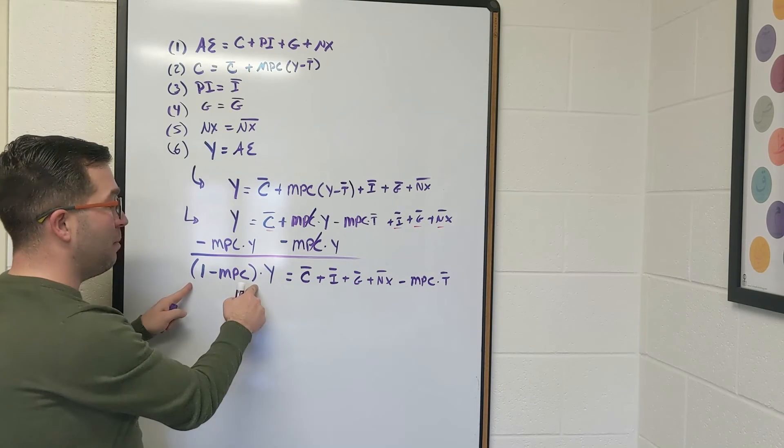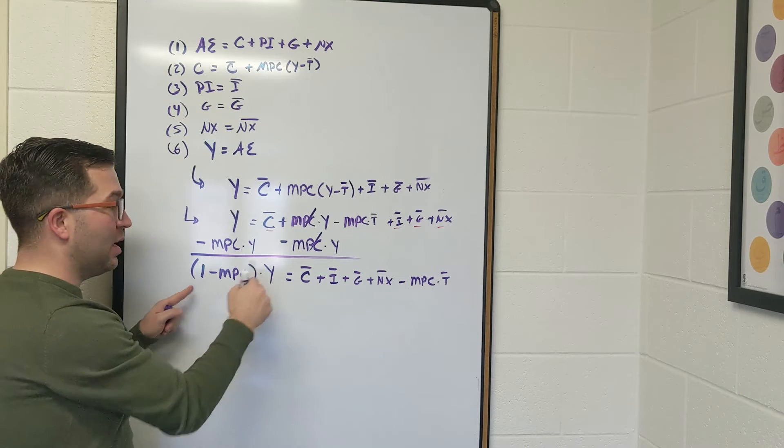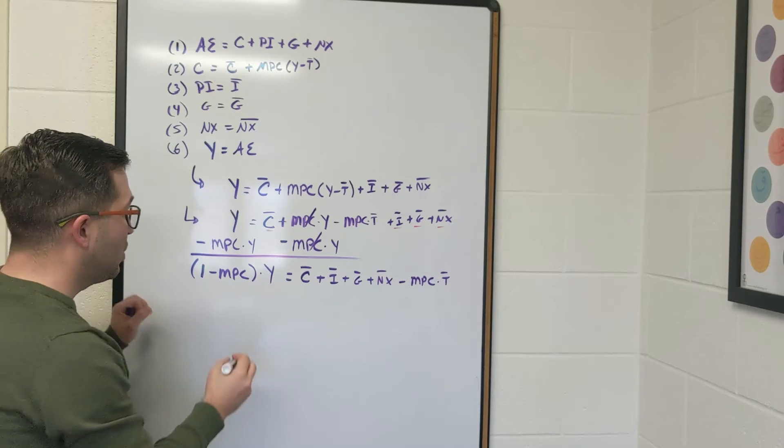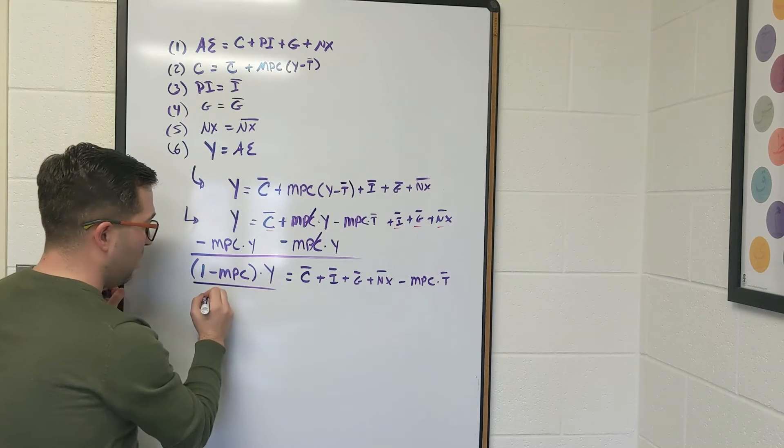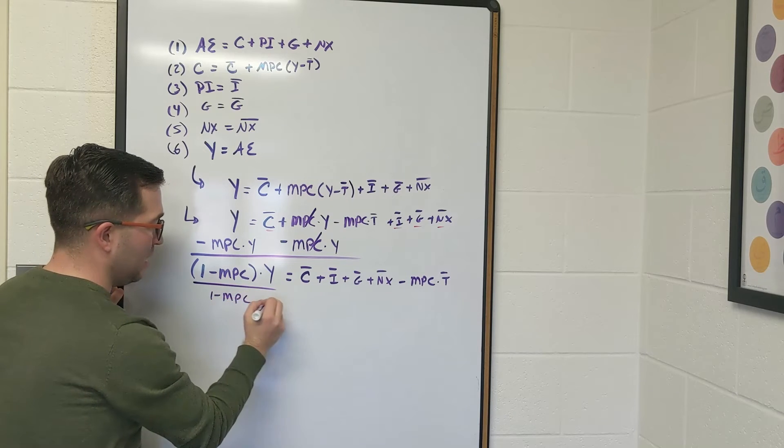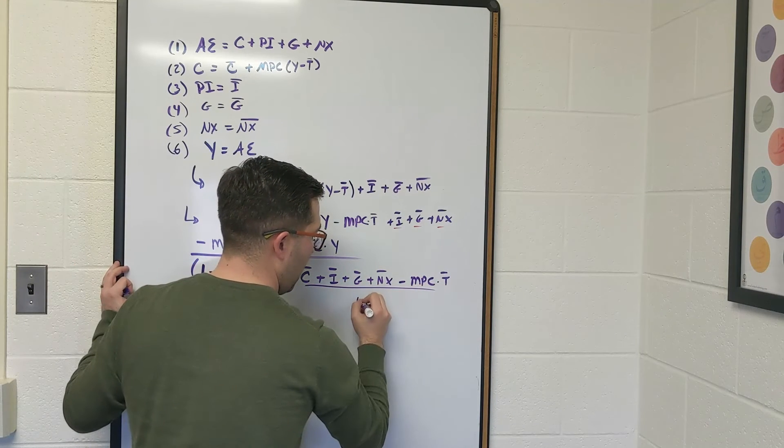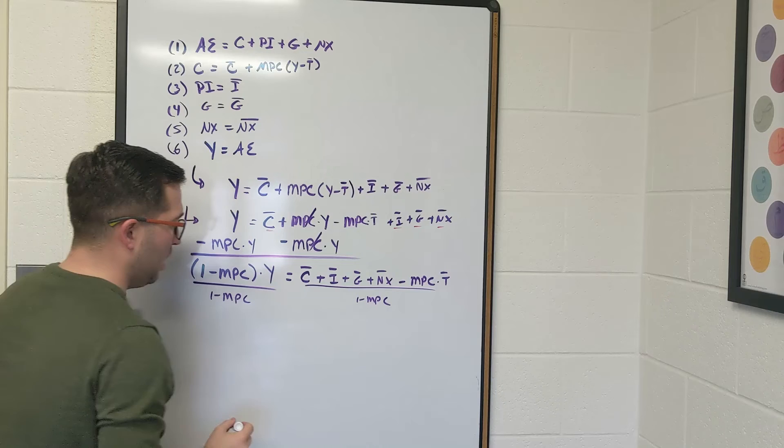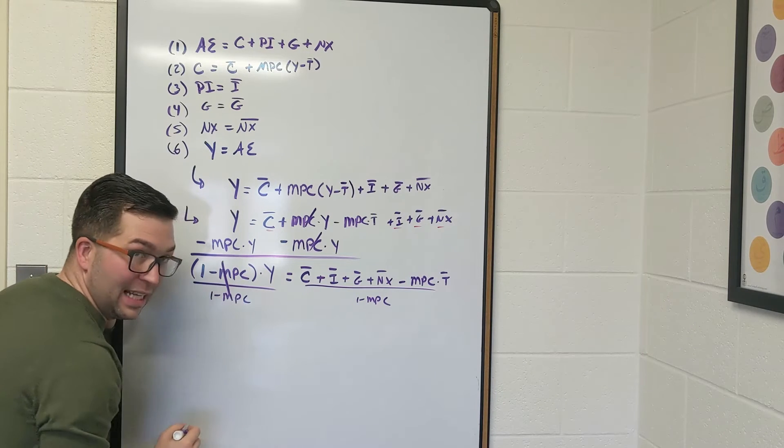Now we need to divide both sides by 1 minus MPC in order to get Y by itself. So let's divide both sides by 1 minus MPC. Those are going to cancel out.